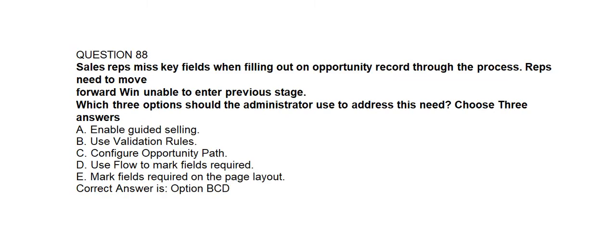Question number eighty-eight. Sales representatives miss key fields when filling out an opportunity required through the process. Representatives need to move forward when unable to enter a previous stage. Which three options should the administrator use to address this need? Option A: Enable guided selling. Option B: Use validation rules. Option C: Configure opportunity path. Option D: Use flow to mark fields required. Option E: Mark fields required on the page layout. Correct answer is Option B, C, and D.